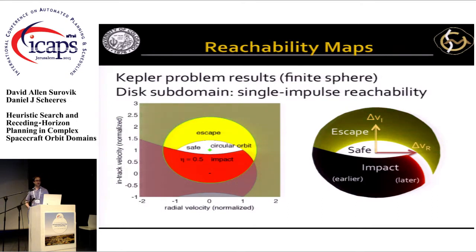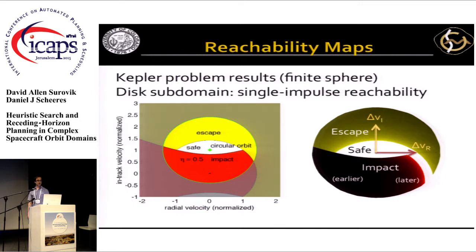I'll walk you through what that roughly looks like, beginning with the Kepler problem because it's simpler. Since the Kepler problem has an analytical solution, I could come up with equations that describe the curves in this image. The domain is the velocity space — the x and y axes are x and y velocities. The point in the center corresponds to a circular orbit, and there's a region around there where other orbits that are more elliptical are also safe.